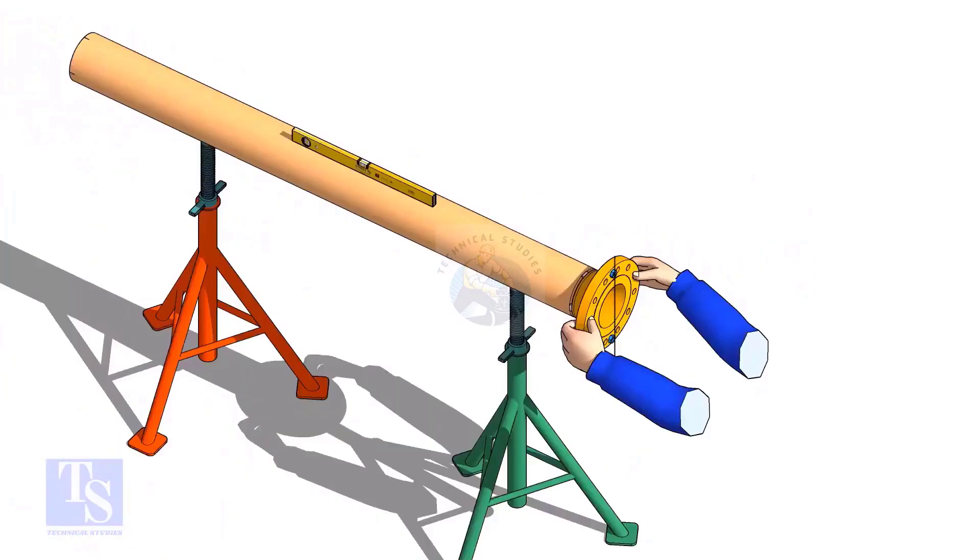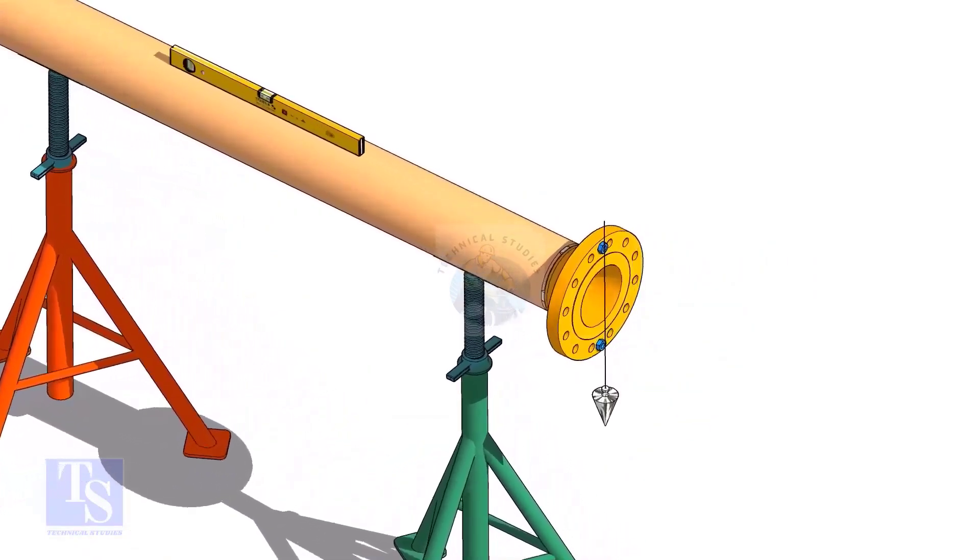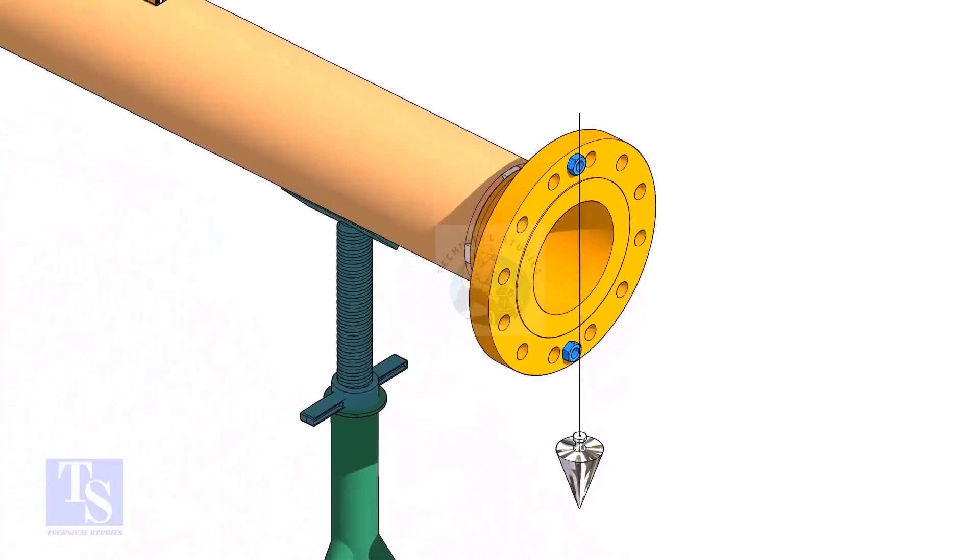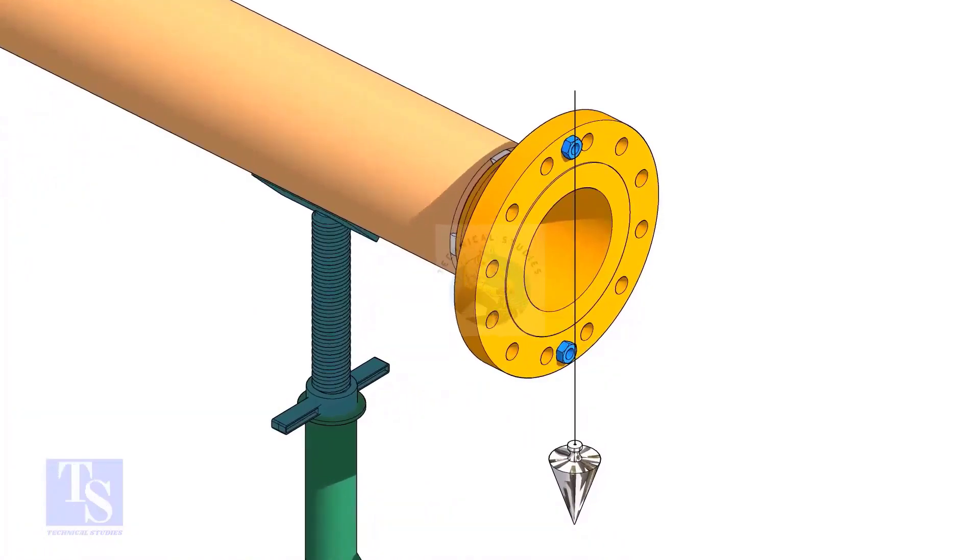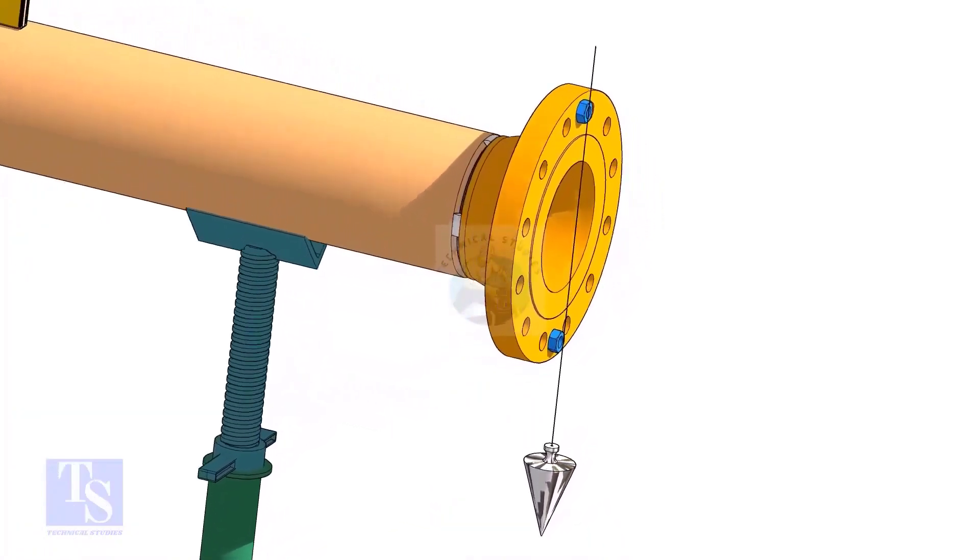In this method, let us learn how to fit up a flange with a pipe using a plumb. Level the pipe, put a plumb through the center of the flange on a nut.